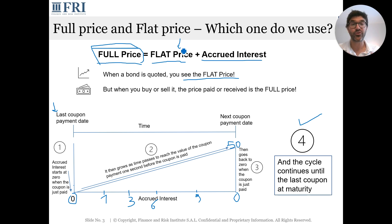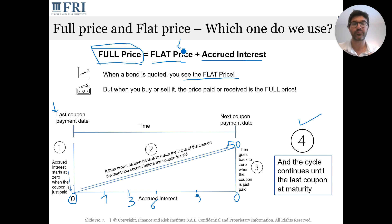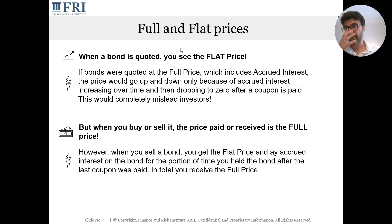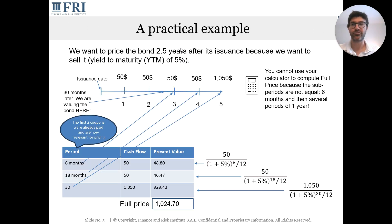Whenever the bond price goes up or down at the flat price, it's for reasons other than accrued interest. Still, if you want to buy a bond, you pay the flat price plus any accrued interest. One last note: the second a coupon payment is made, the full price equals the flat price. As time passes and accrued interest builds, the full price inflates while the flat price remains the same if nothing else changes.